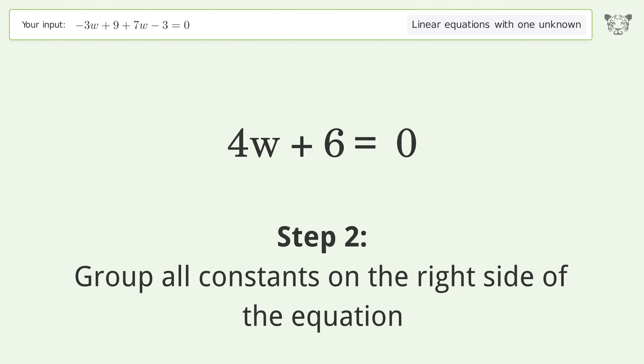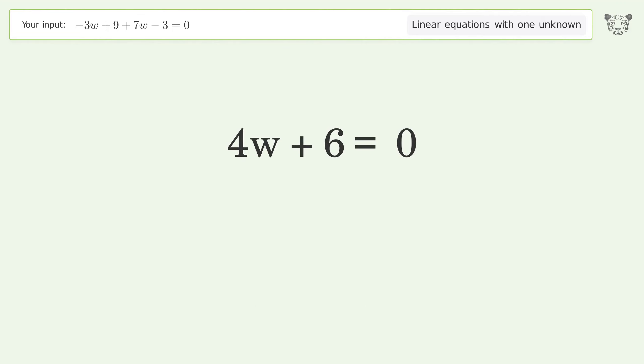Group all constants on the right side of the equation. Subtract 6 from both sides. Simplify the arithmetic.